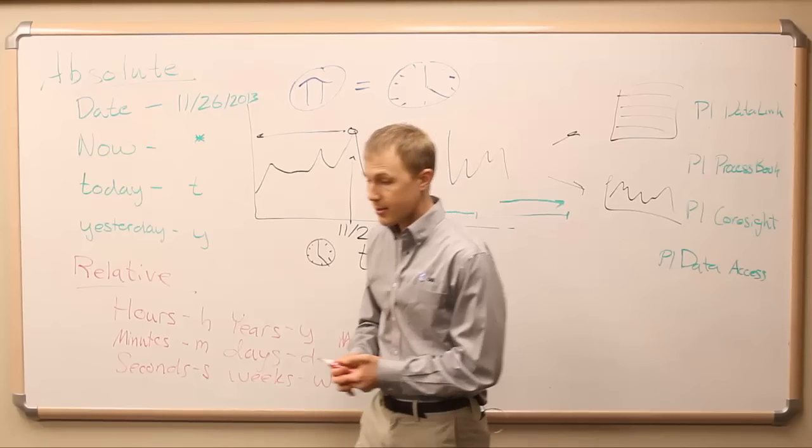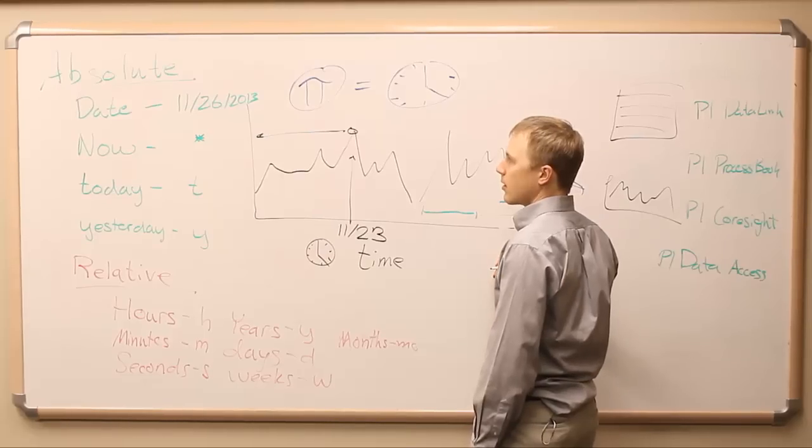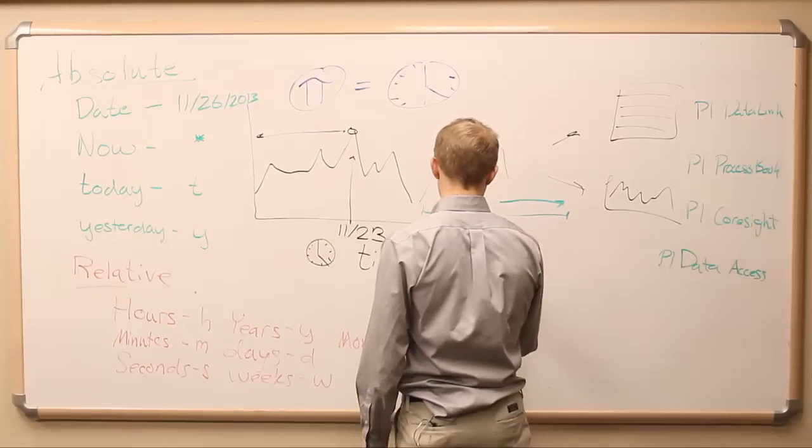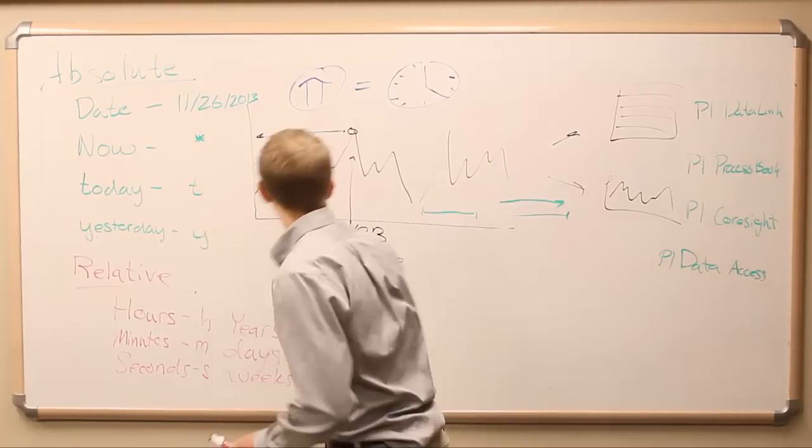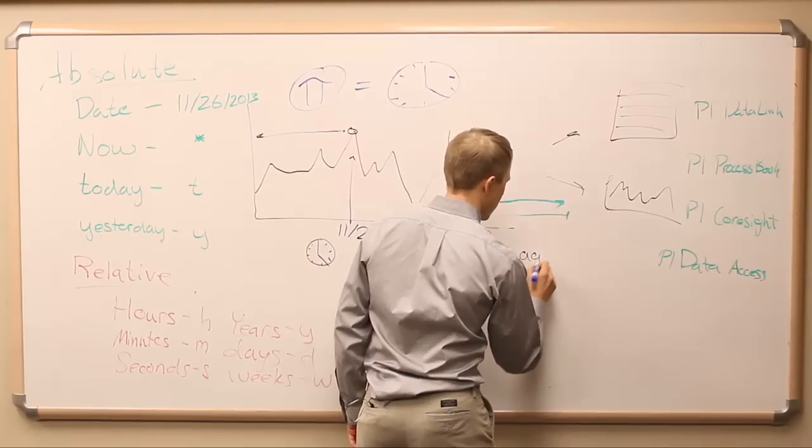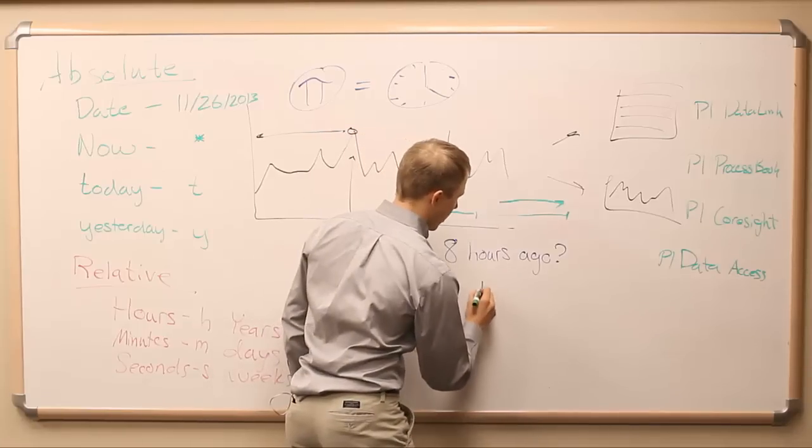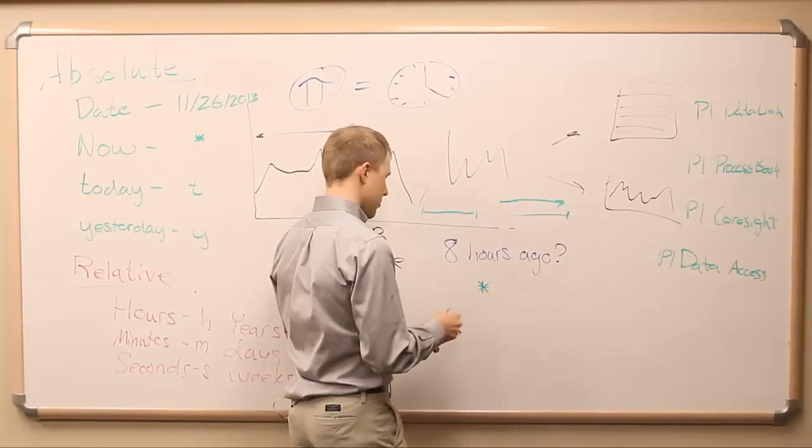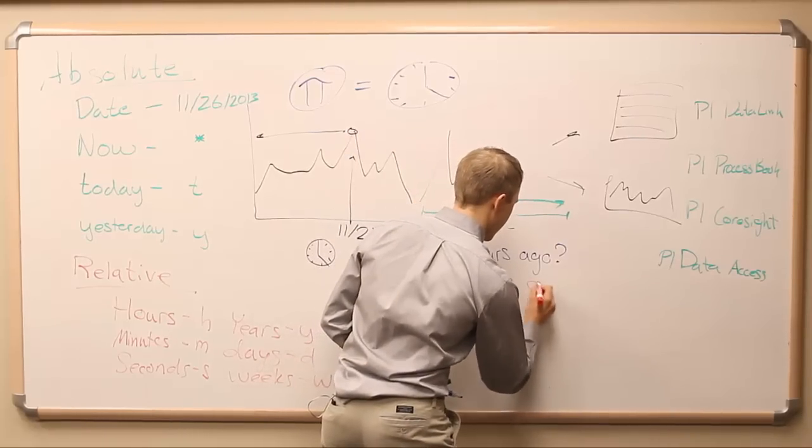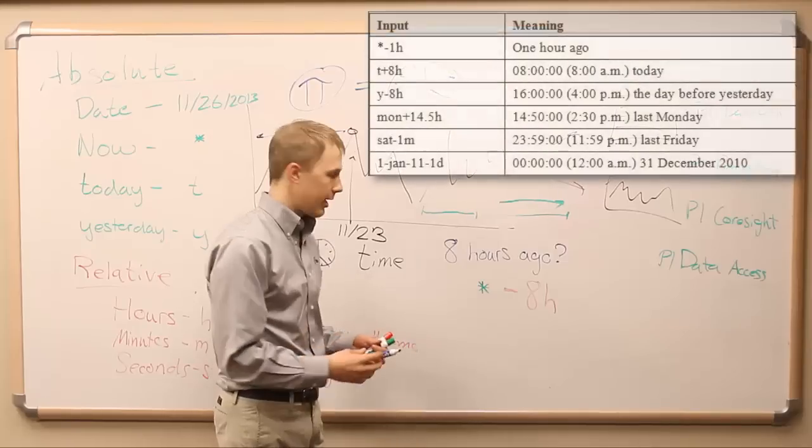But I could now combine these two to make a powerful time reference. So, I could say something like, what was the value eight hours ago? And that would be, let me write it down so we can all see it. So, if I wanted to know eight hours ago, that would refer to, I could probably say, that's now minus eight hours. And this refers to eight hours ago in PI shorthand.